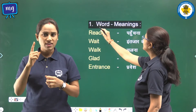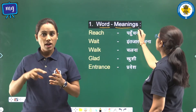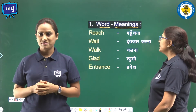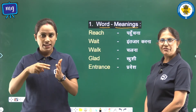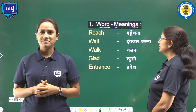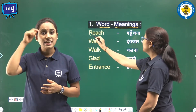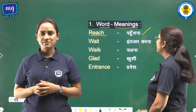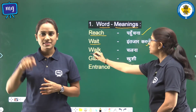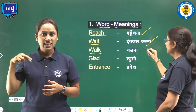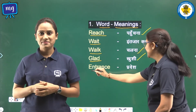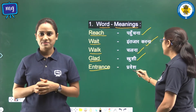Question number 1: Word meanings. Children, in this question we shall learn the meaning of these English words in Hindi. Reach means Pahunchna. Wait means Intizar Karna. Walk means Chalna. Glad means Khushi. Entrance means Pravesh.